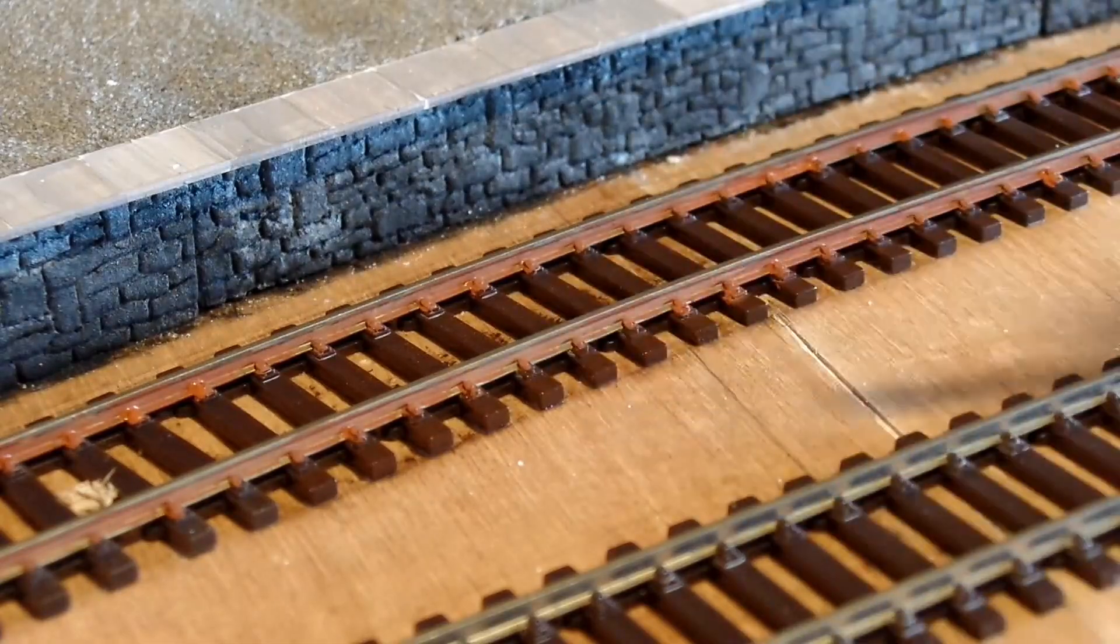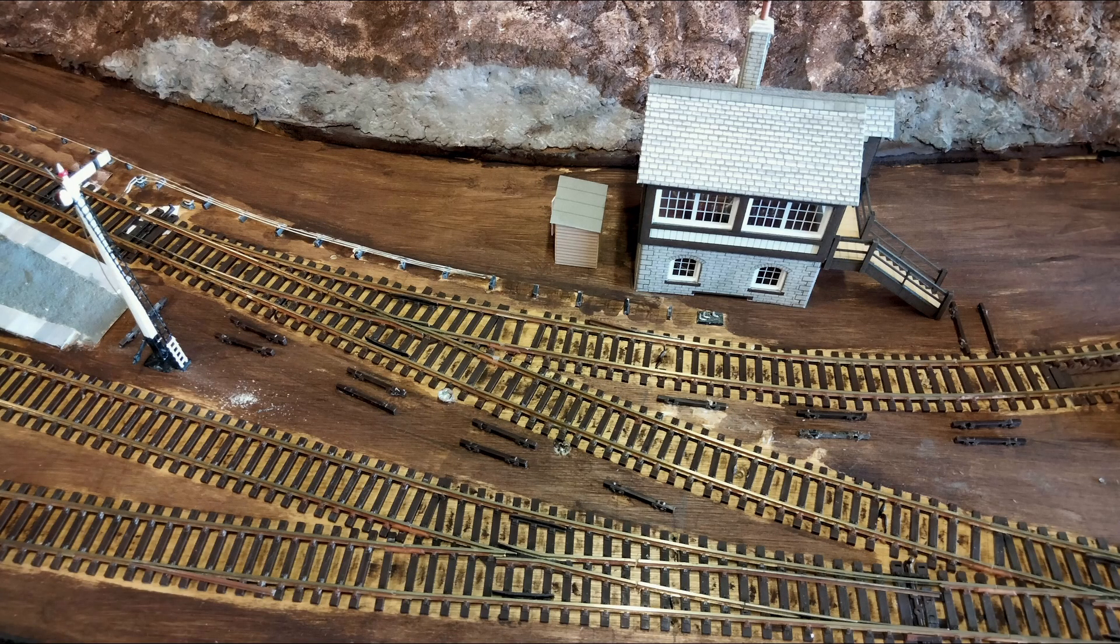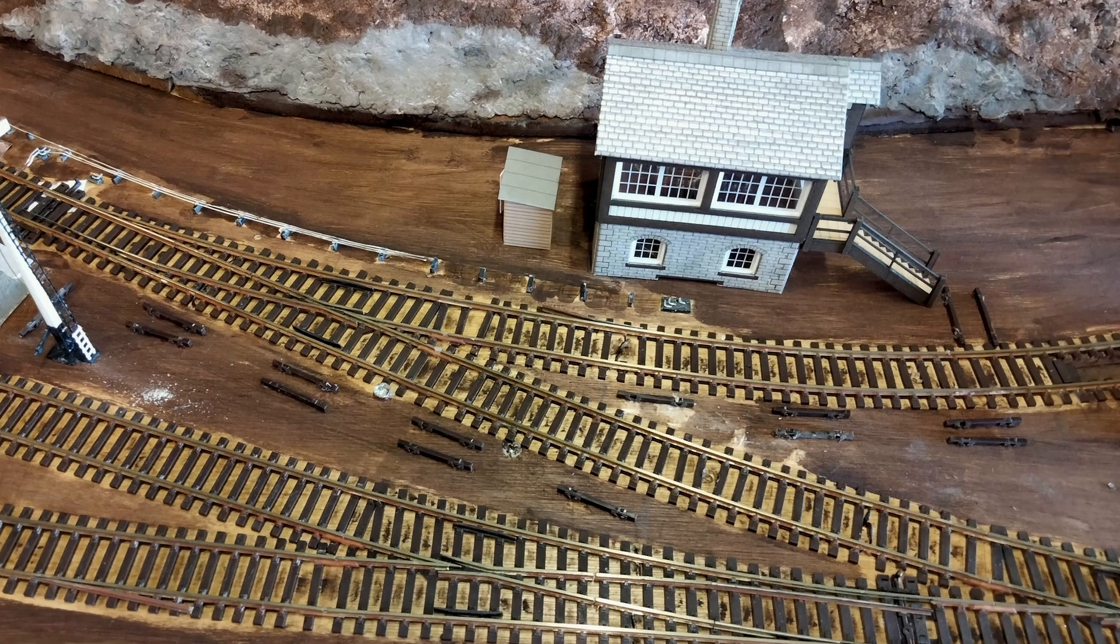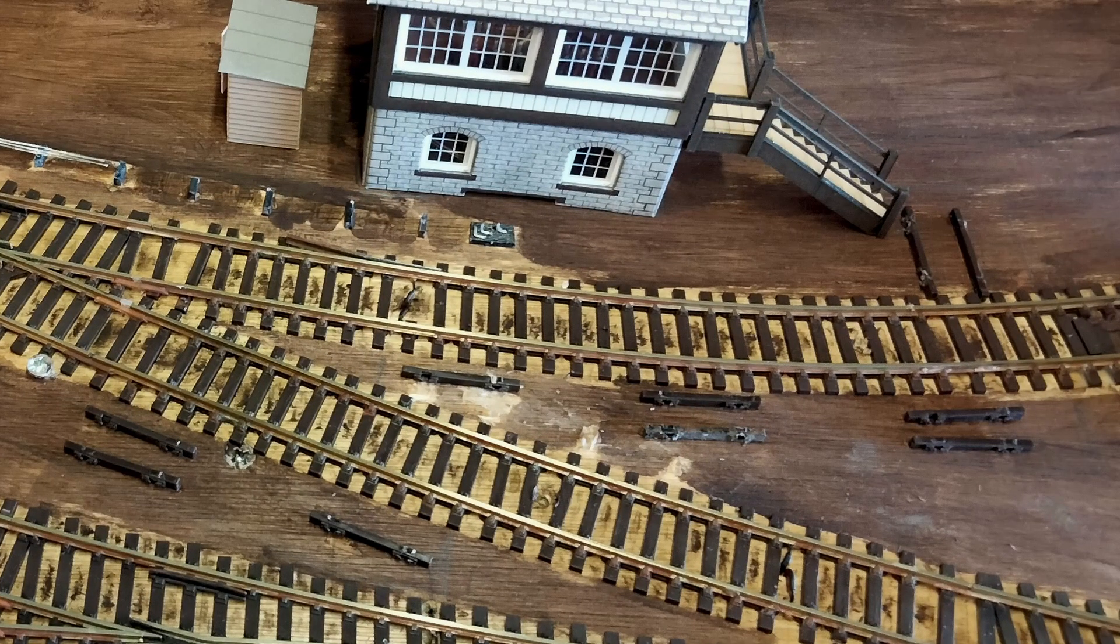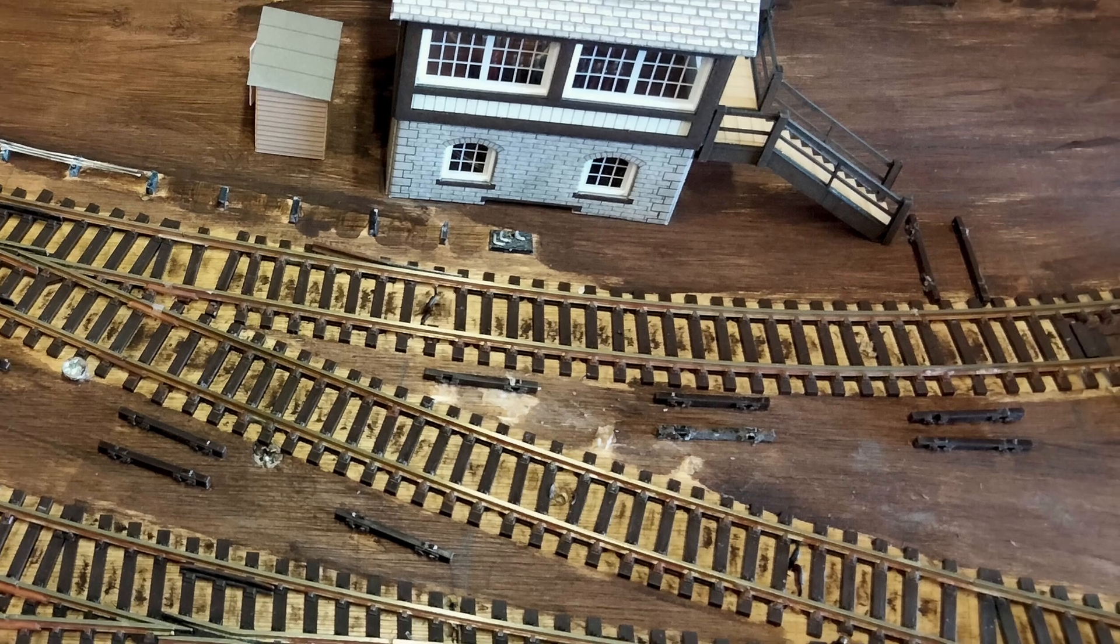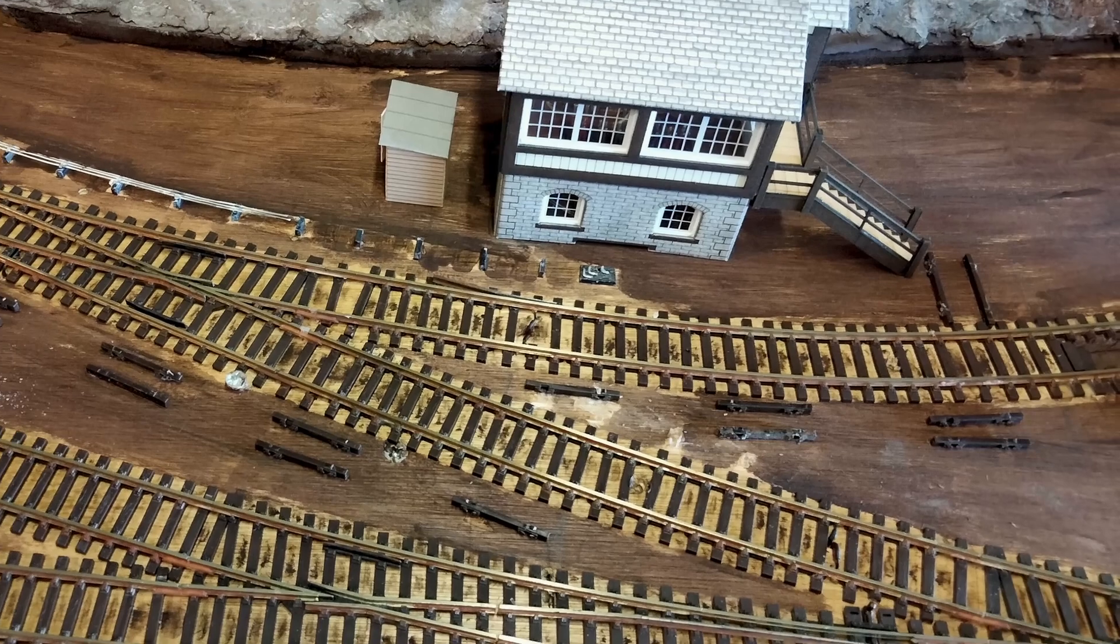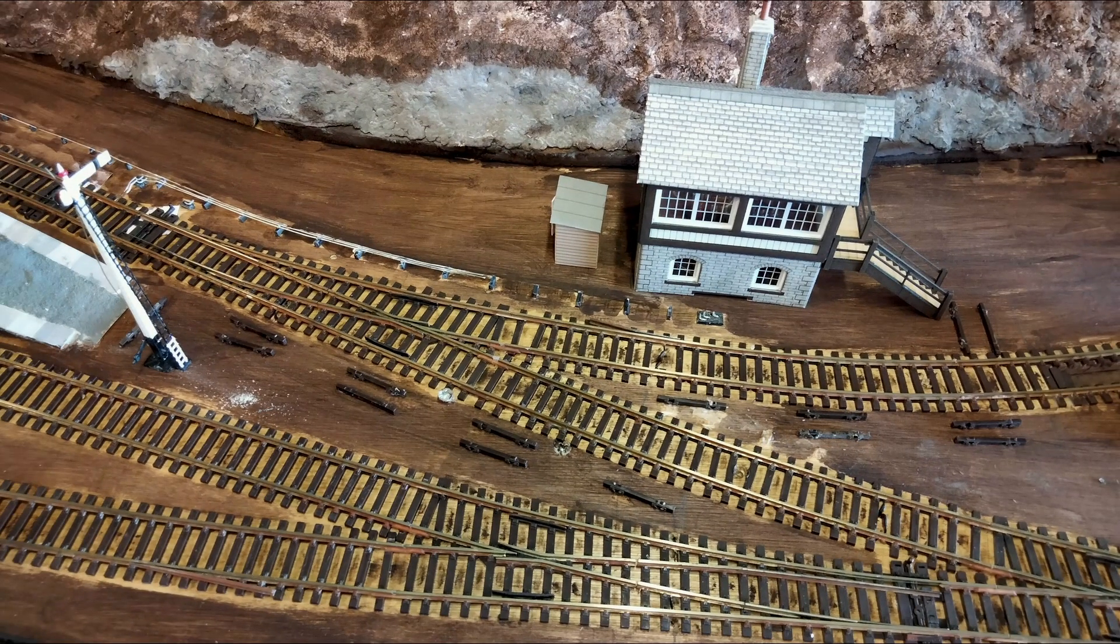Next, the signalman will need a walkway from the signal box to the platform. Because health and safety did actually exist back in the 1930s, believe it or not. I've started things off by gluing these support structures in place. They're actually leftover sleepers. I'll then be able to ballast around those supports, before then putting the wooden walkway on top of that. But that's a topic for a future video because I haven't done it yet.